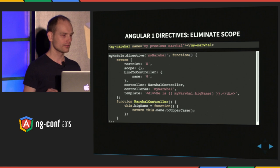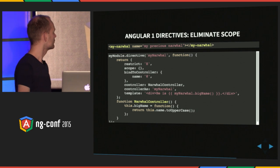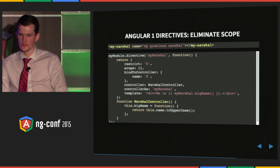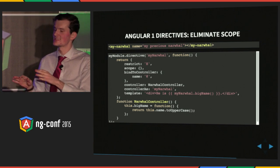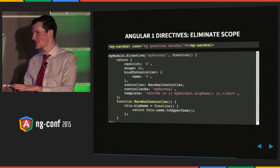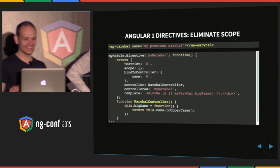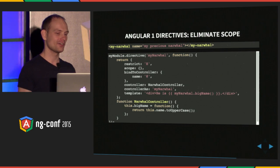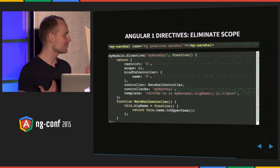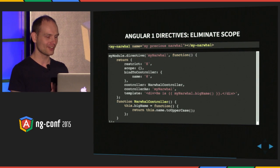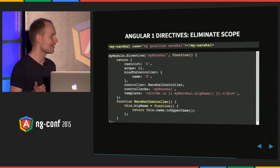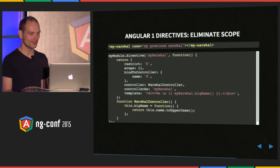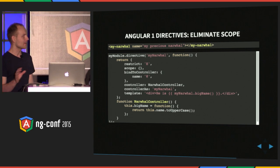Look at all this boilerplate — I've got to declare my scope, my restrict, bind to controller, and declare my controller-as. If this is Angular 1 best practice, it's way too much. There are a lot of boilerplate items and it's easy to forget something. But what do you do if you have the same code repeating in many places? You abstract it.